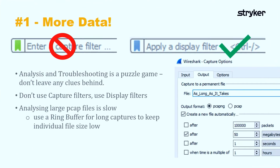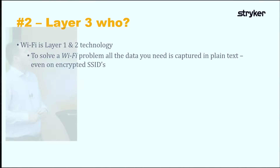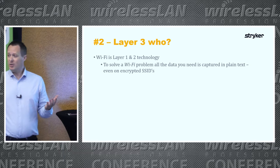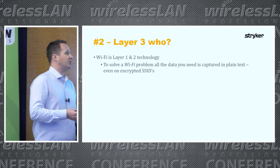Analyzing large PCAPs is really slow in Wireshark — it's not very good at large data sets. So if you need to capture for more than a couple of minutes, apply a ring buffer so it creates multiple smaller PCAPs for you. When you find the one where the problem exists, you can work through that file much quicker than working with a PCAP over an hour long.